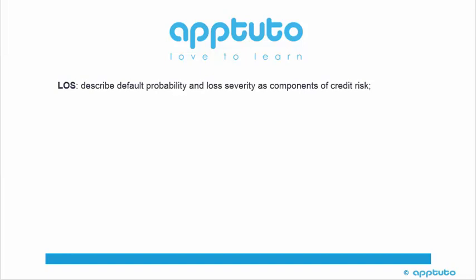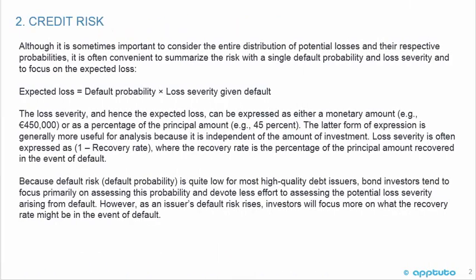This LOS has described default probability and loss severity as components of credit risk. Although it is sometimes important to consider the entire distribution of potential losses and their respective probabilities, it is often convenient to summarize the risk with a single default probability and loss severity and to focus on the expected loss. The expected loss equals the default probability times the loss severity given default.